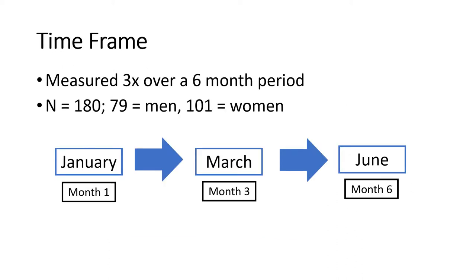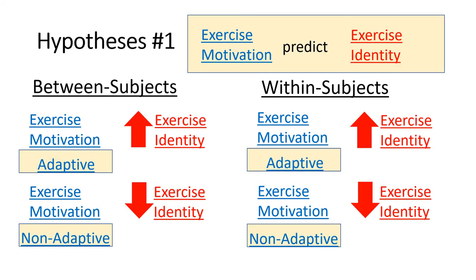This is a longitudinal study. They measured individuals at three time points over a six-month period — measured once in January, March, and June — and collected 180 participants from fitness centers and recreational community centers. The first hypothesis looks at how exercise motivation can predict exercise identity, examining this as both a between-subject and within-subject hypothesis. Both hypotheses suggest that if individuals begin with an adaptive form of motivation, their exercise identity should stay relatively high over time, whereas a non-adaptive motivation may result in low identity throughout.